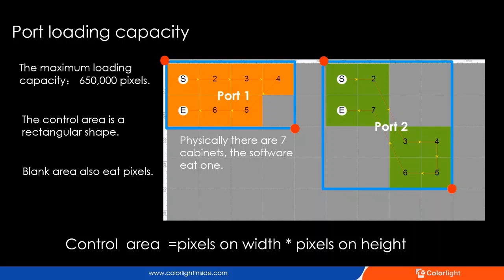If you are not using our control system for the first time, you should have heard about the limitation of each output port — 650,000 pixels. That means the maximum loading capacity for one Ethernet cable. What is the basis for calculating total pixels? In the control system, there is what's called a control area, like the blue rectangle. It is a rectangular area from the start point in the upper left to the pixel in the lower right. For example, there is no cabinet on the lower right, but the blank areas will also consume pixels.